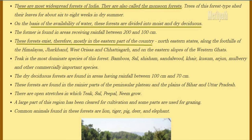Tropical deciduous forests are the most widespread forests of India. They are also called the monsoon forests. Trees of this forest shed their leaves for about 8 weeks in summer. On the basis of availability of water, forests are divided into moist and dry deciduous. They receive rainfall between 100 and 200 cm. These forests exist mostly in the eastern part of the country — northeastern states, along the Himalayas, Jharkhand, West Orissa, Chhattisgarh and slopes of the Western Ghats.